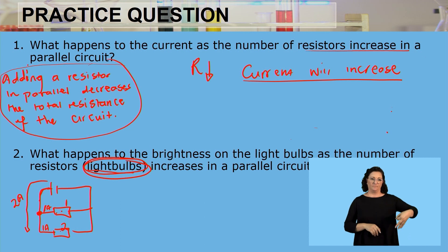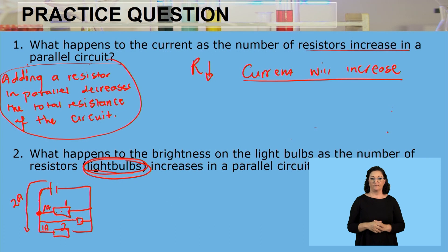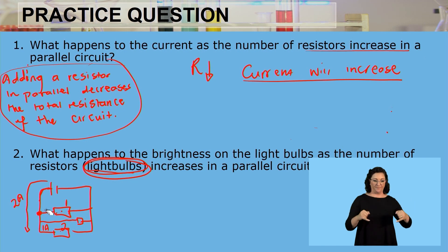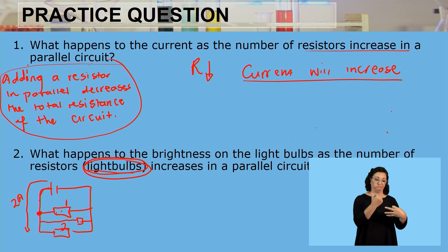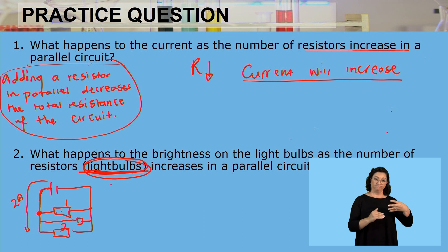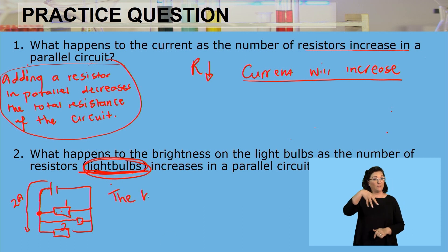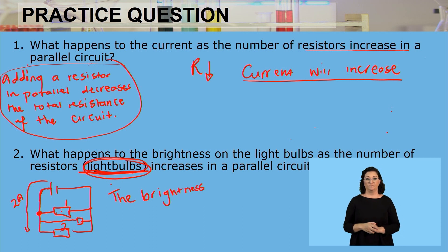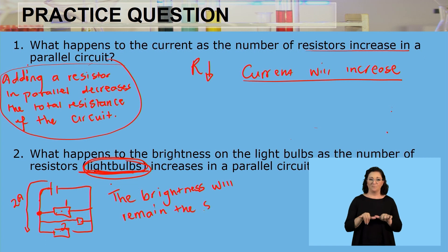If I add another resistor and make them three, they will still be in parallel and each of them will have the same resistance. If they each have the same resistance, the current will split into three equal parts. Because each of those three resistors are identical, they will each receive the same current strength, and therefore the brightness of each of those resistors is still going to be the same. So the brightness will remain the same throughout these light bulbs.